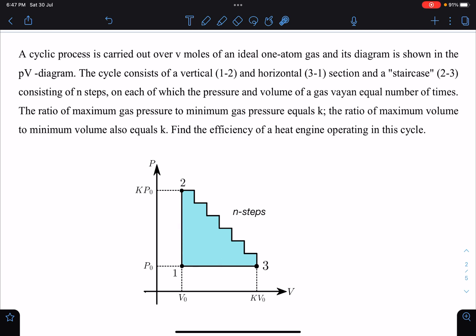A staircase is given from 2 to 3. There are n steps here—I have just shown a few steps—on each of which the pressure and volume of gas varies equal number of times.